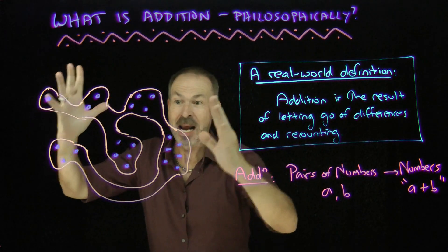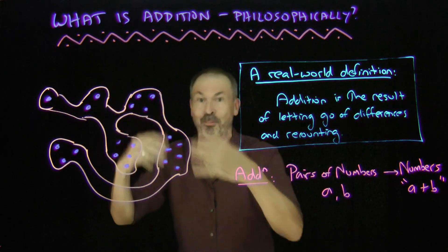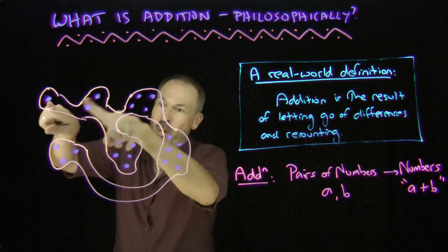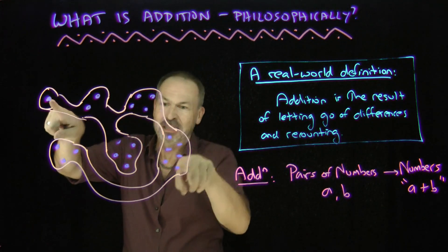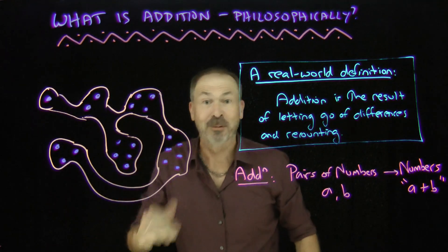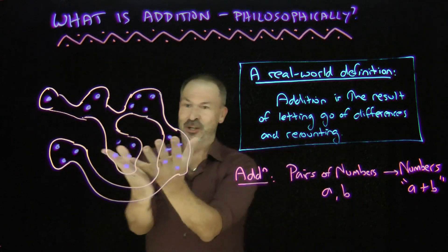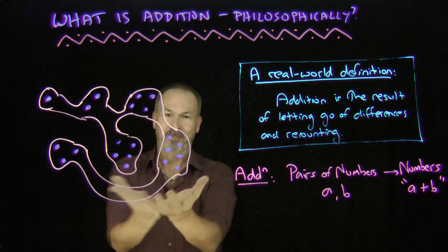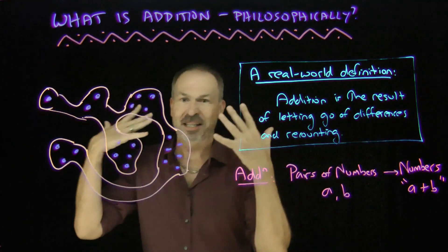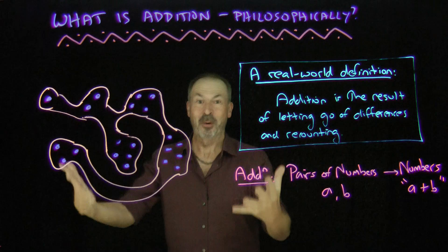No matter what choices I make along the way, the final result is going to be just one blob of objects. And that one blob of objects must be all the dots I started with, which happened to be 21. So you can see this definition of addition — being letting go of differences — really tells me something profound about what's going on here.